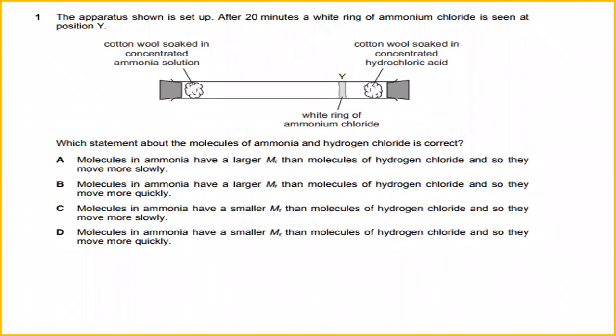The apparatus shown is set up. After 20 minutes, a white ring of ammonium chloride is seen at position Y. Which statement about the molecules of ammonia and hydrogen chloride is correct? The answer for this is A: molecules in ammonia have a larger Mr than molecules of hydrogen chloride and so they move more quickly.